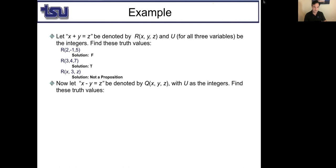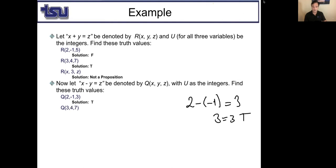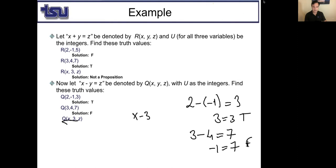Here is another propositional function Q(x, y, z). For example, Q(2, -1, 3): x is 2, y is -1, and 2 - (-1) = 3, so that's true. How about Q(3, 4, 7)? Three minus four equals negative one, which is not equal to seven — that's false. And Q(x, 3, z) is 'x - 3 = z,' which is not a proposition because x and z are unspecified.